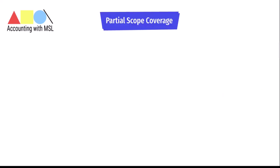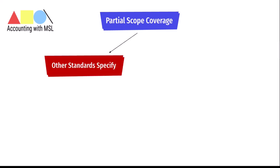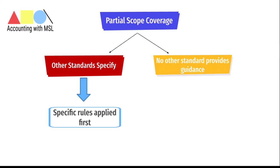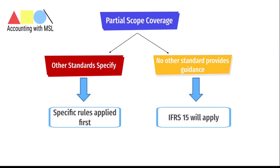It's important to mention that a contract with the customer may be partially within the scope of IFRS 15 and partially within the scope of another standard. In that scenario, if other standards specify how to separate and/or initially measure one or more parts of the contract, then those separation and measurement requirements are applied first. The transaction price will be reduced by the amounts initially measured under the other standard. However, if no other standard provides guidance on how to separate or initially measure one or more parts of the contract, then IFRS 15 will be applied.